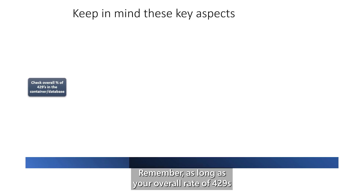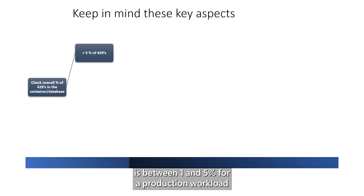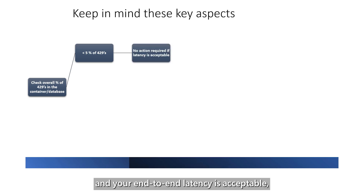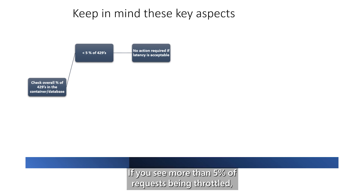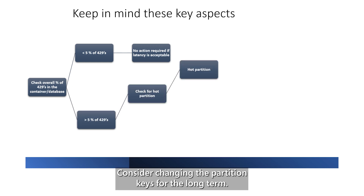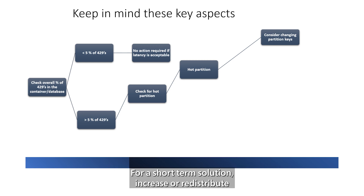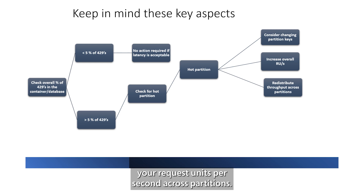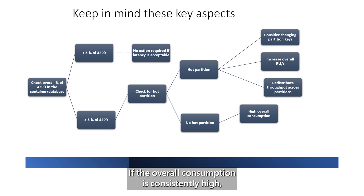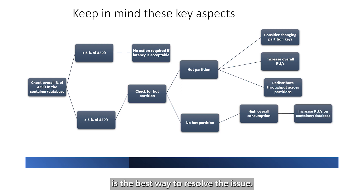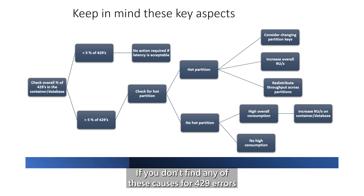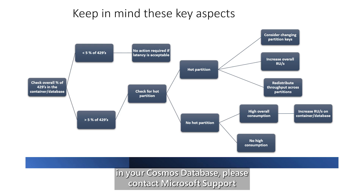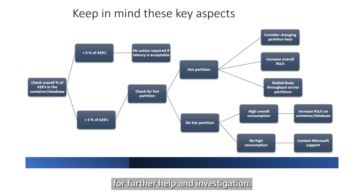Remember, as long as your overall rate of 429s is between 1 and 5% for a production workload and your end-to-end latency is acceptable, you're simply maximizing the request units per second you've provisioned. If you see more than 5% of requests being throttled, start by checking if there's a hot partition. Consider changing the partition keys for the long term. For a short-term solution, increase or redistribute your request units per second across partitions. If the overall consumption is consistently high, increasing request units per second is the best way to resolve the issue. If you don't find any of these causes for 429 errors in your Cosmos database, please contact Microsoft Support for further help and investigation.